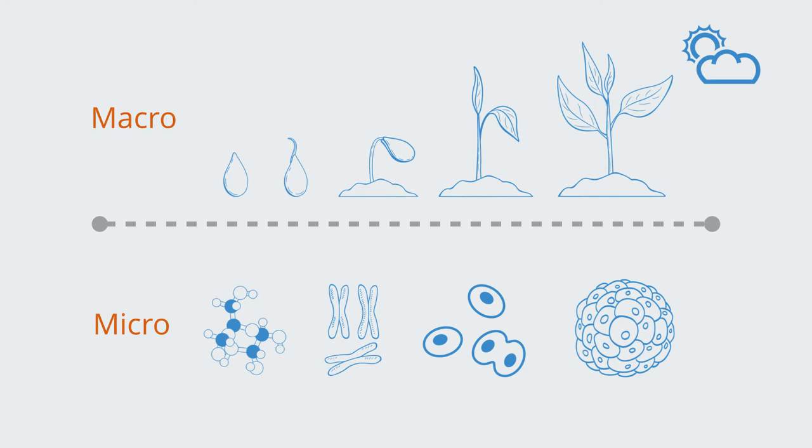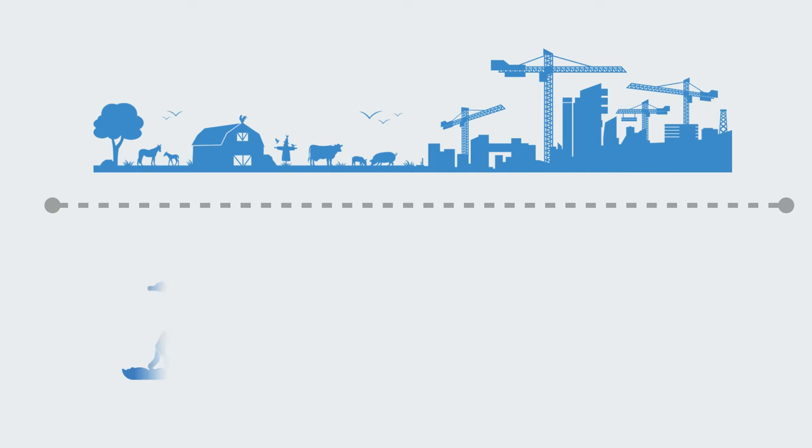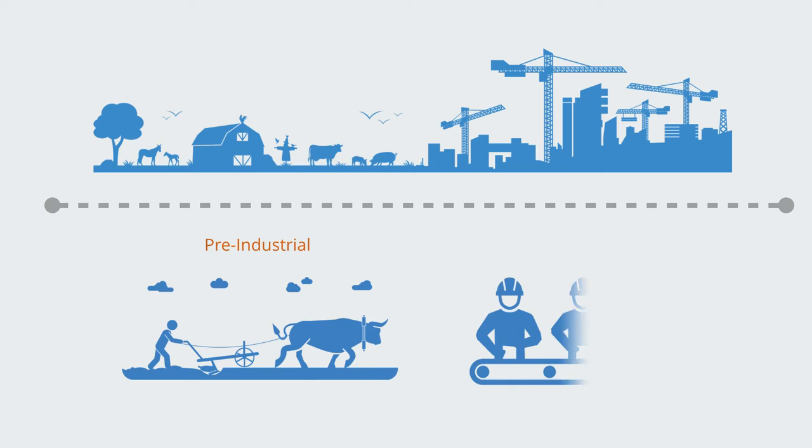For example, ecosystems, societies, and economies go through macro level processes of change such as succession and industrialization that have their own internal dynamics on the macro level. Often all the parts have to move together into a new macro level regime, and this places a downward cause on the parts.